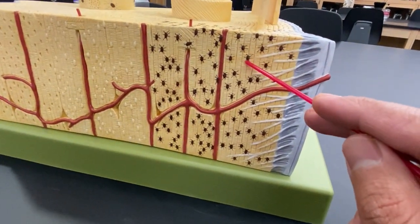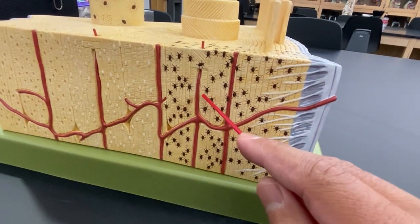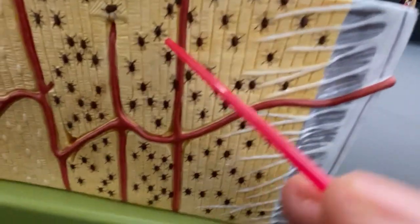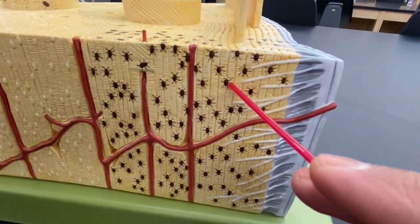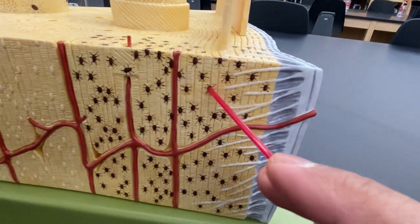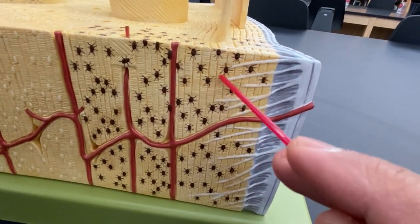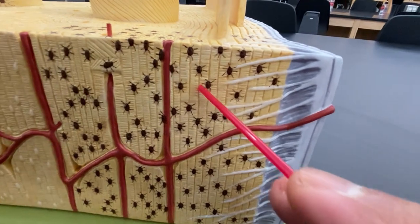These right in here are your osteocytes that will maintain bone, so they kind of look like little spiders here. But the reason they look like little spiders is they're actually branching out their little pods so they can communicate via these canaliculi.